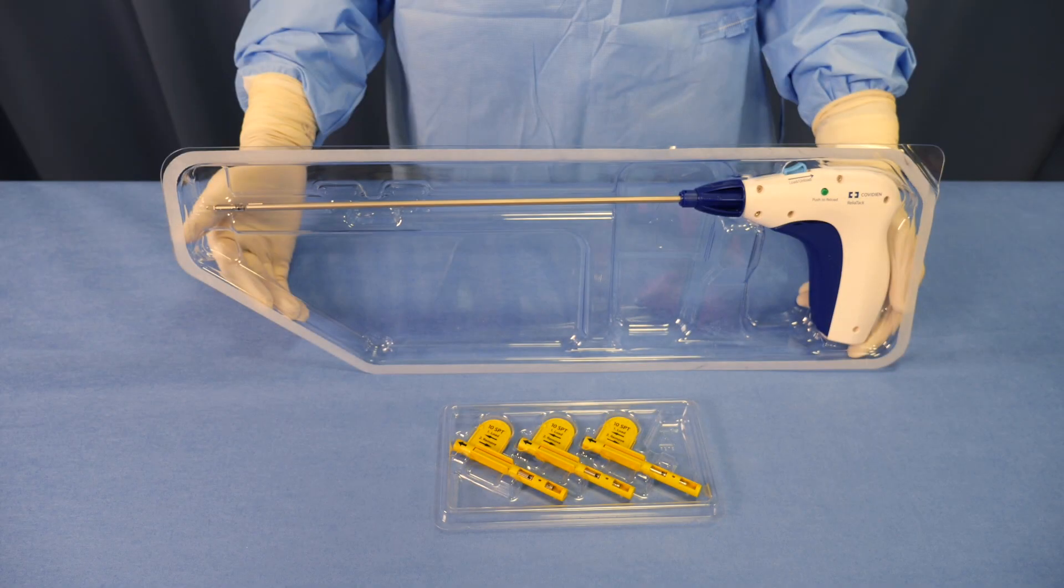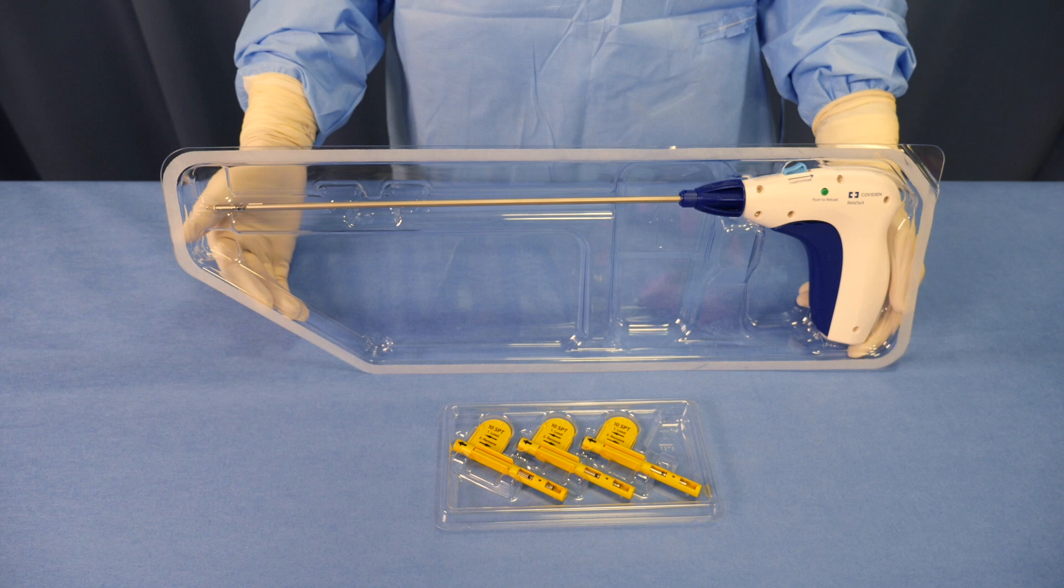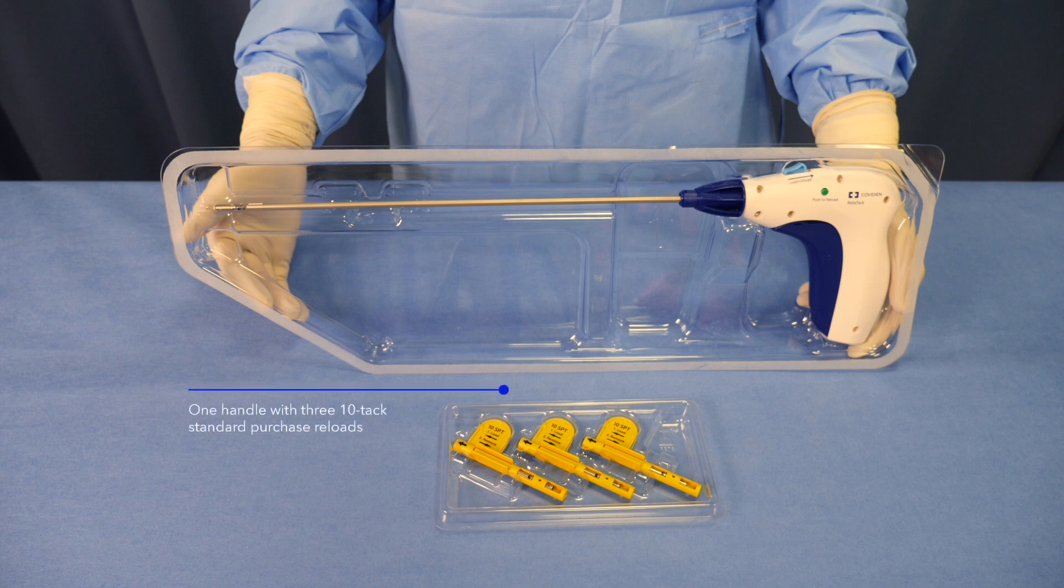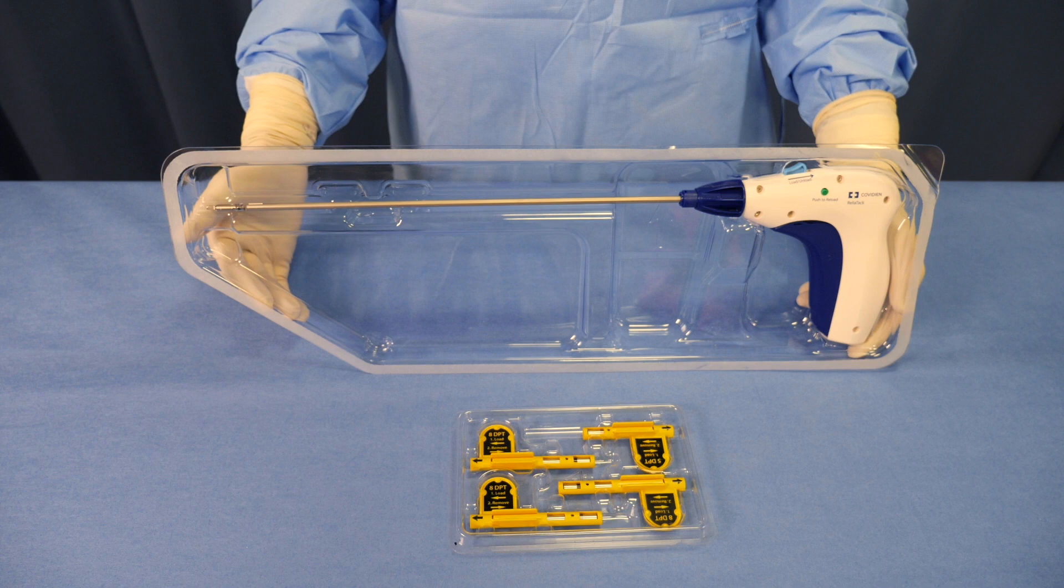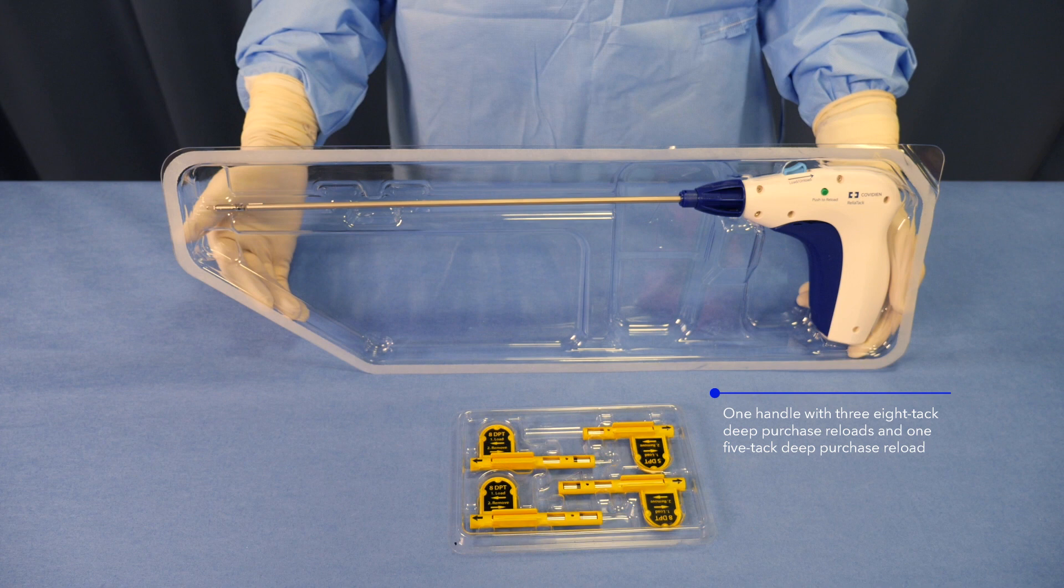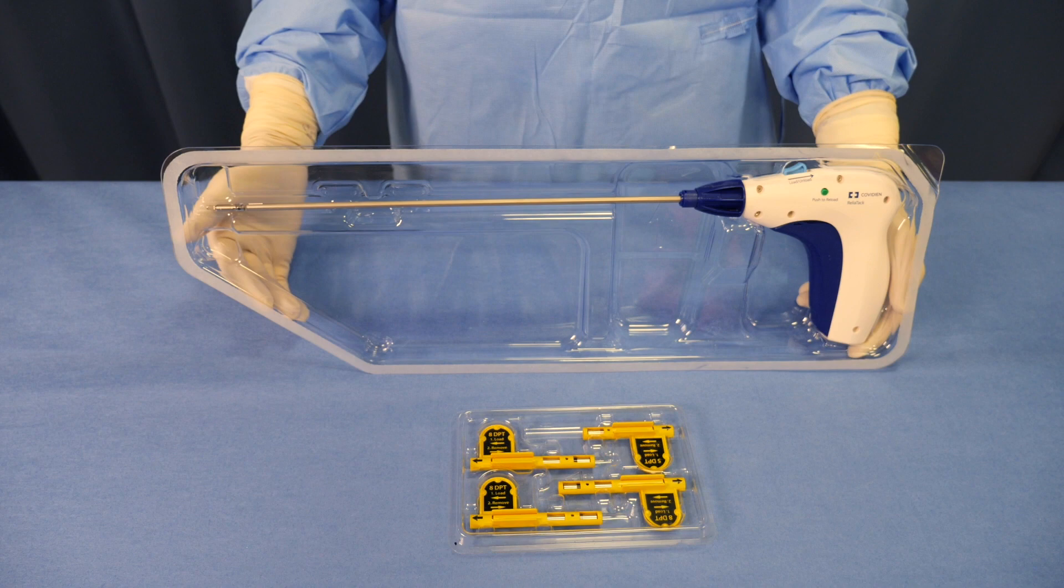The Reliatak Articulating Reloadable Fixation Device is intended for single use only. It is packaged sterile. Reliatak Fixation Device is available in two configurations. One handle with three 10-Tak Standard Purchase Reloads or one handle with three 8-Tak Deep Purchase Reloads and one 5-Tak Deep Purchase Reload. Please be sure to remove the reloads from the box when removing the handle.